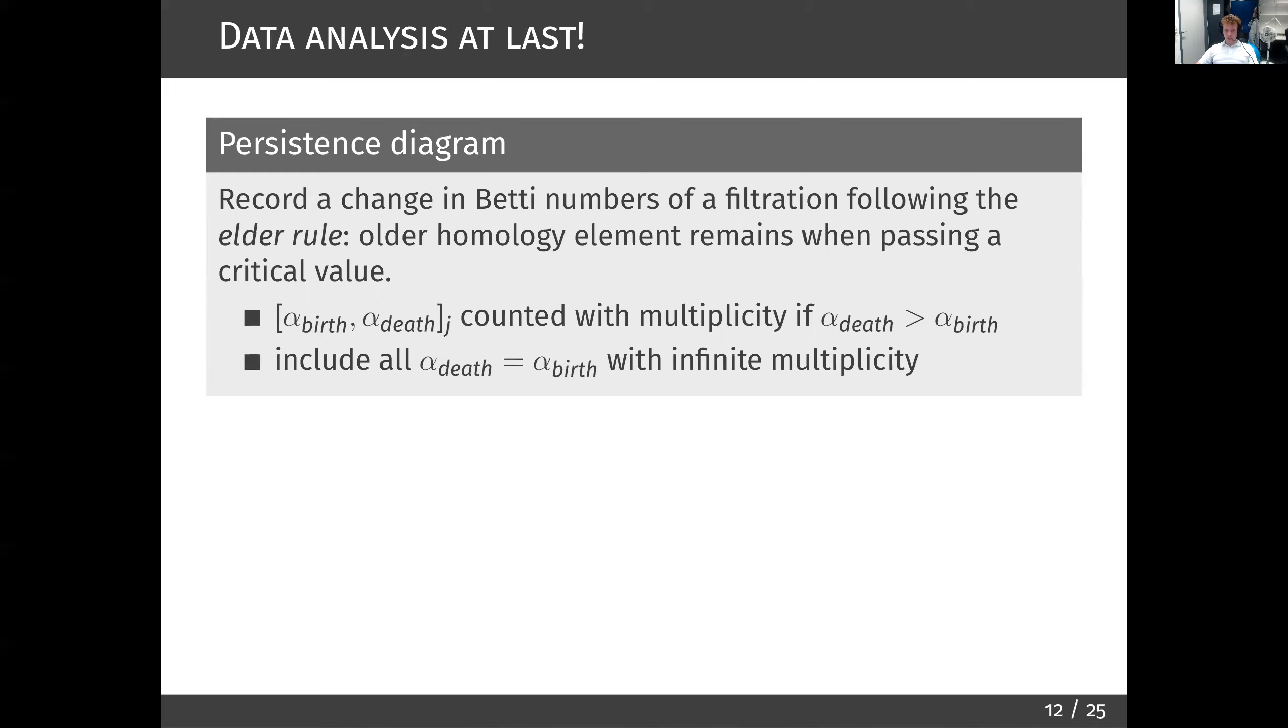Hence, to numerically summarize a filtered function, we keep track of these changes by recording Betty numbers in a canonical way. If an element dies when passing a critical value, an older element remains. A filtered function is summarized by a collection of real valued intervals counted with multiplicity. All birth death values as points on the Euclidean plane together with the diagonal at which birth equals death define a persistence diagram that can be further treated in data analysis.